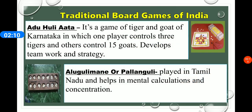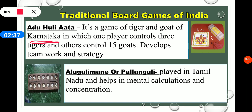The first traditional board game of India is Aduhuli Atta — the game of Tiger and Goat of Karnataka, which helps to develop strategy and teamwork. One player controls three tigers while the other controls a flock of 15 goats. Next is Aluguli Mane and Palanguli, played in Tamil Nadu, which helps in mental calculation and concentration.